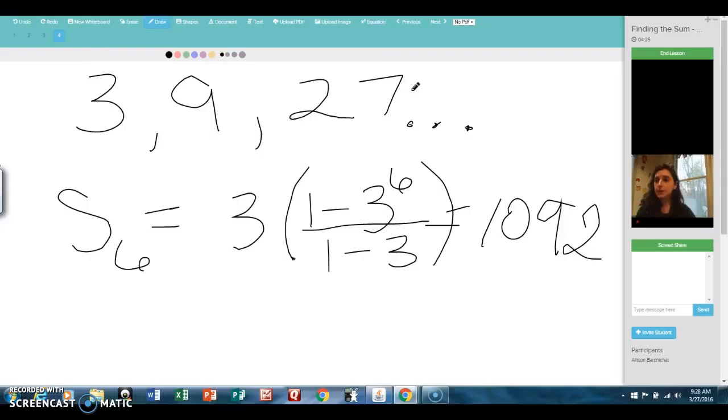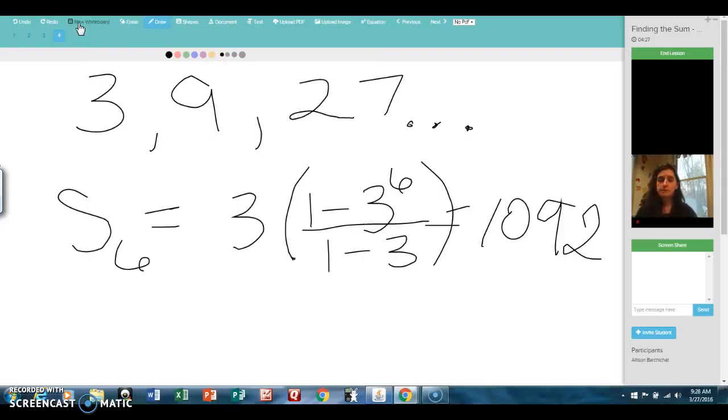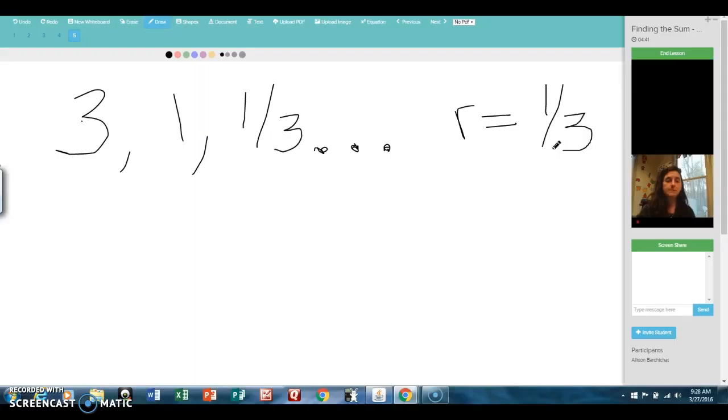Alright, one more example for us. So here's another geometric pattern. This time I'm multiplying each time by the common ratio of 1 third. So if I'm asked to find the sum of an infinite number of terms, I can use the second formula I showed you where we take the first term and divide it by 1 minus r.